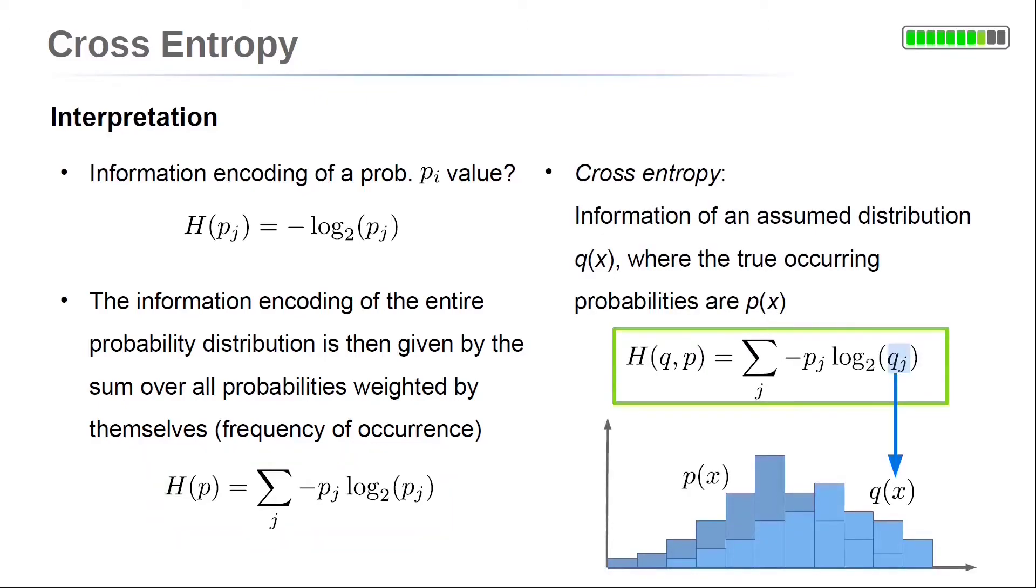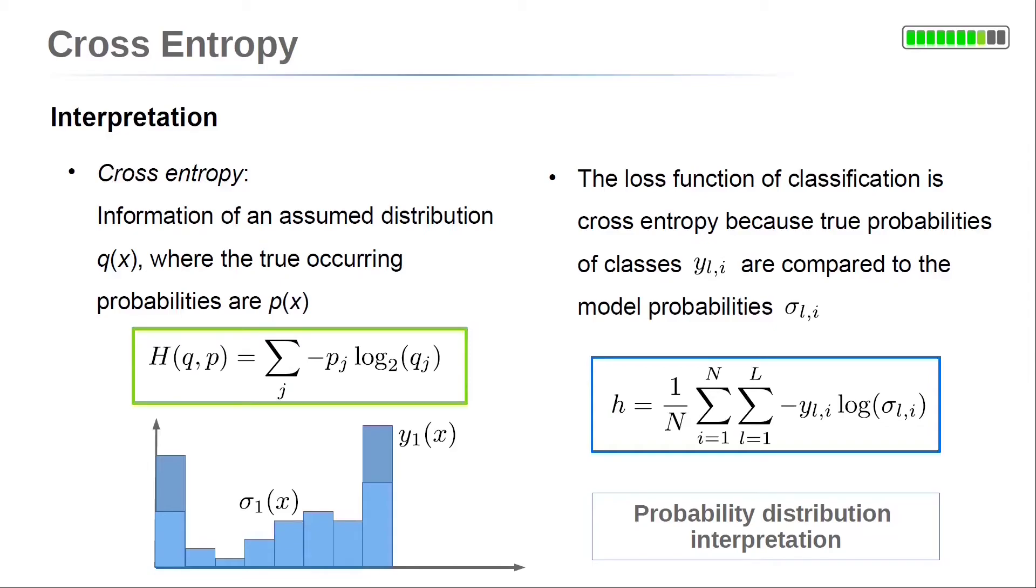Now, if we assume that we have a probability distribution q, but in reality, the values occur with a probability p, we have capital H of p and q equals the sum over all probabilities of minus p times the logarithm of q. This equation has the same structure as the cost function of logistic regression. So, the cross entropy gives the information entropy of a probability distribution, and the word cross indicates that the real probabilities are different from the assumed distribution.